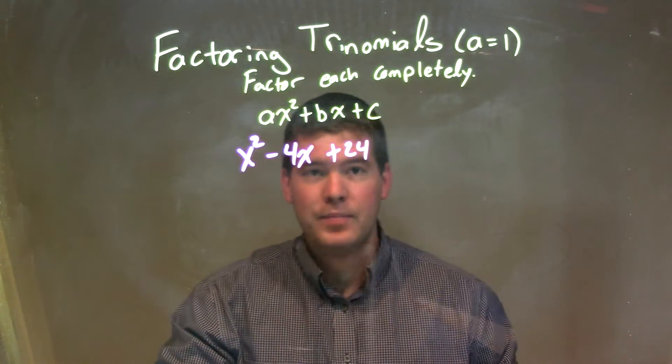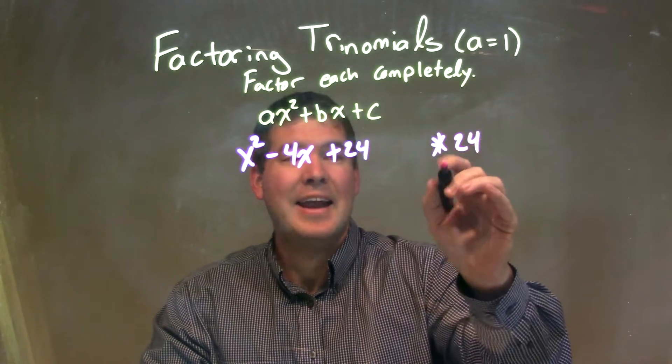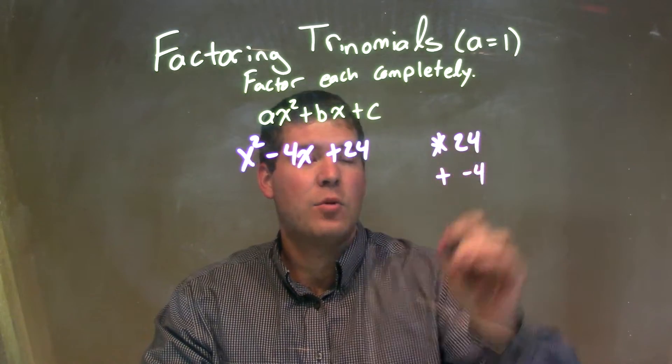So these are a values 1. What I'm going to ask myself here is what two numbers multiply to be 24 and add to be a negative 4.